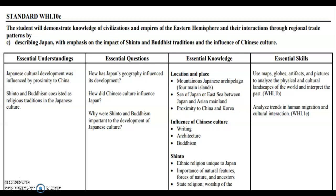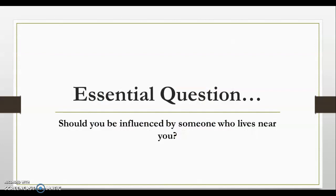Today's SOL standard is 10c, describing Japan with emphasis on the impact of Shinto and Buddhist traditions and the influence of Chinese culture. We're going to go back and look at Buddhism, something you're all very familiar with from first semester. Buddhism is going to have a major role in the history of Japan. The essential question for today is: should you be influenced by someone who lives near you?